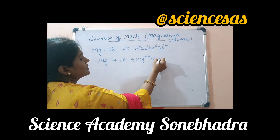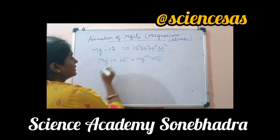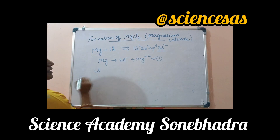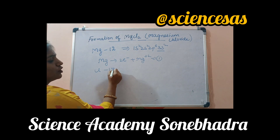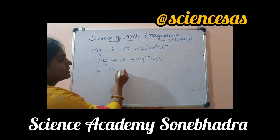Let this be equation 1. The second element is chlorine, with atomic number 17.